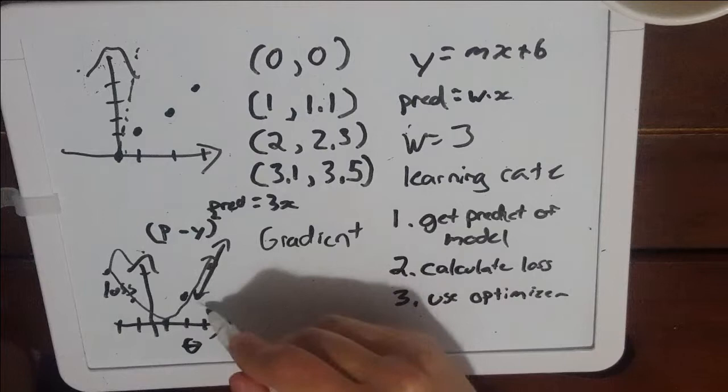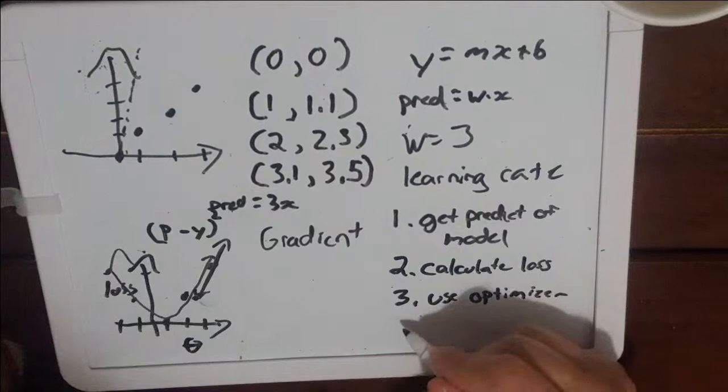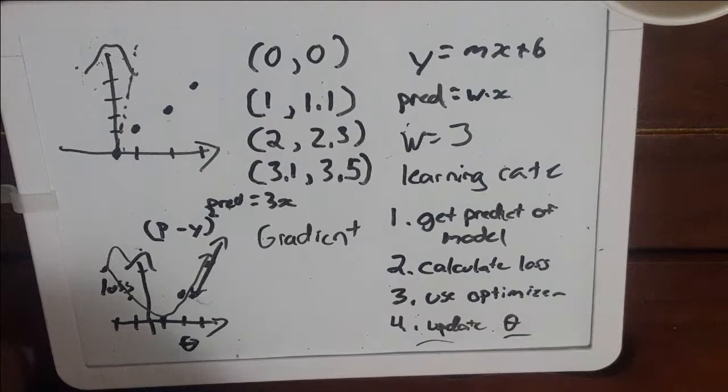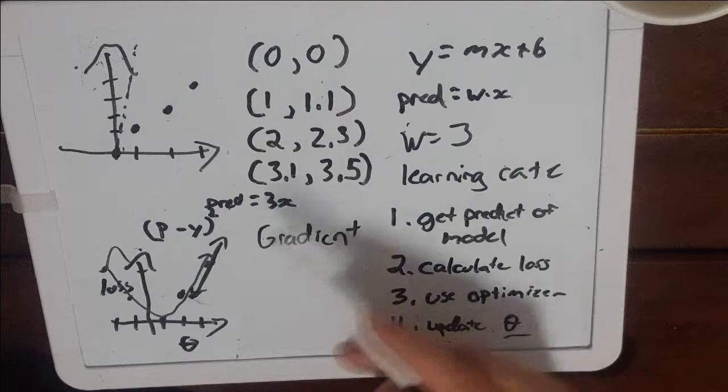What we're going to do is take the slope of this, multiply by our learning rate, and shift our parameter in that direction in the x direction. So when we do that we're going to end up maybe here. And that leads us to step four: update our parameters.